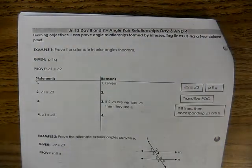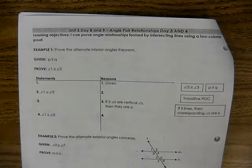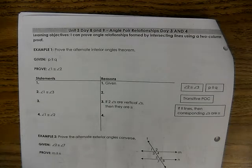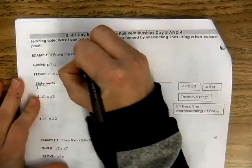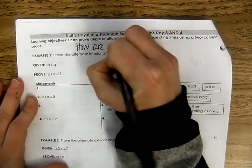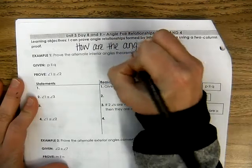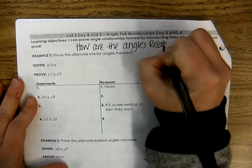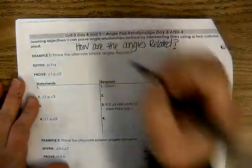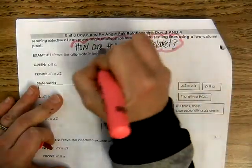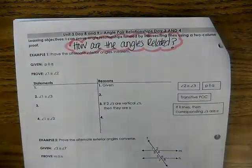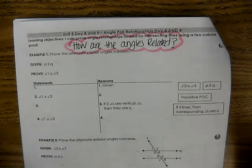Hi everyone. For today's lesson, we are going to continue with angle pair relationships, but this time we are going to be proving relationships. So the first thing I want you to do whenever you are analyzing these proofs is to ask yourself: how are the angles related? That is so important — how are the angles related? That's a question I want you to ask yourselves over and over again for every single line that you write in these proofs.